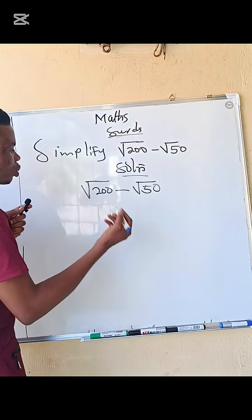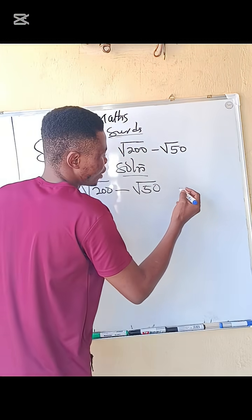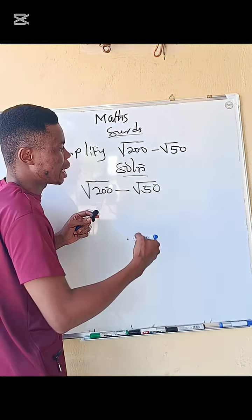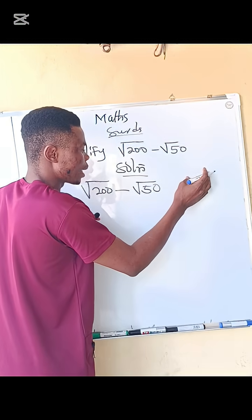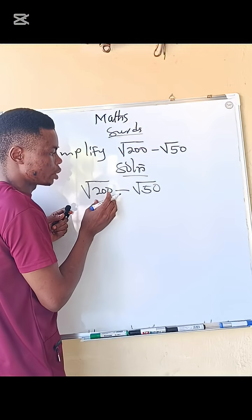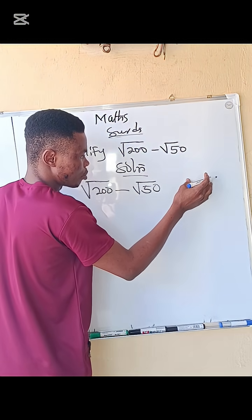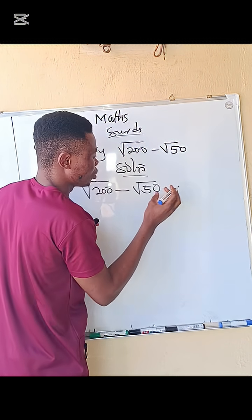What do we do? Remember, for 200, you are going to find two numbers and one of the numbers must be a perfect square and the other one must not be a perfect square, so that when you multiply you have 200. The same thing with 50 - you are going to find two numbers and one of the numbers must be a perfect square so that when you multiply these two numbers you have 50.